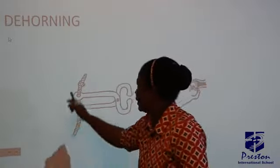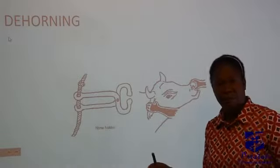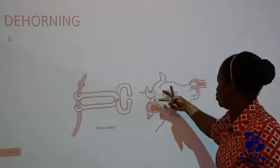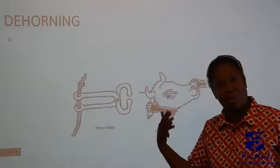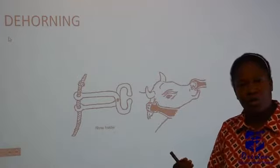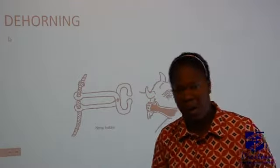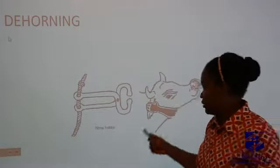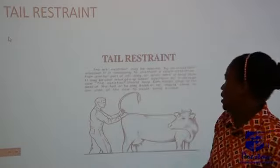The next one is dehorning — very, very important. You dehorn them so that they will not use the horn to injure one another. It's another practice that you need to embark on.